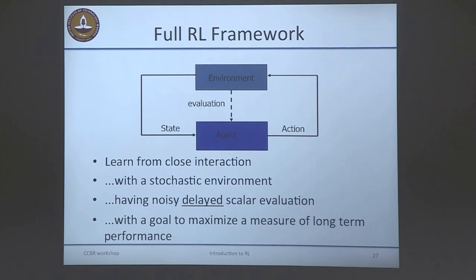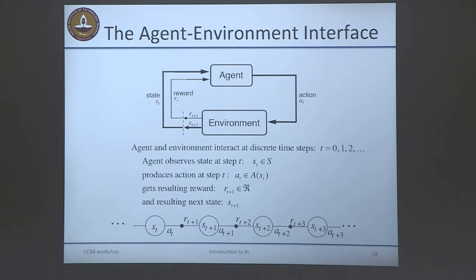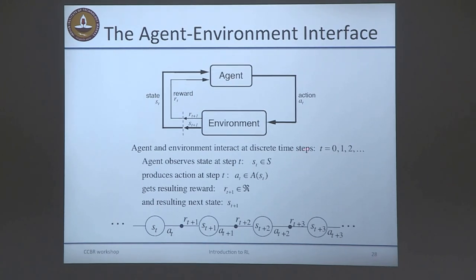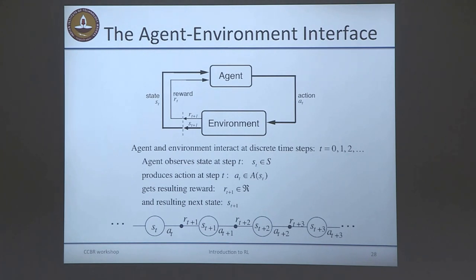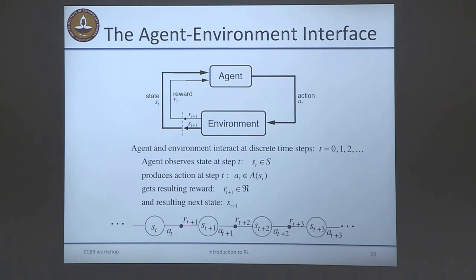More formally: the agent senses state s_t at time t, takes action a_t, which is applied to the environment. As a result, the environment transitions to state s_{t+1} and produces an evaluation r_{t+1}. This notation is consistent with the popular Sutton and Barto textbook. The agent is at state s_t, takes action a_t, gets reward r_{t+1}, and transitions to s_{t+1}. This interaction keeps going.